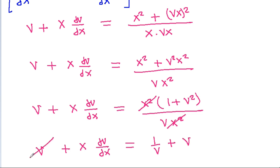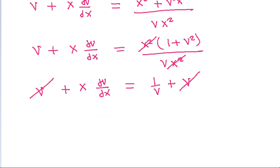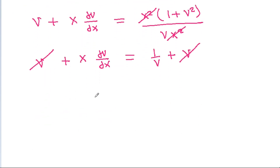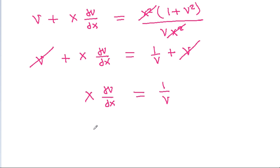And v will get cancelled on both sides, leaving x dv/dx = 1/v. Separating variables, v dv = dx/x.